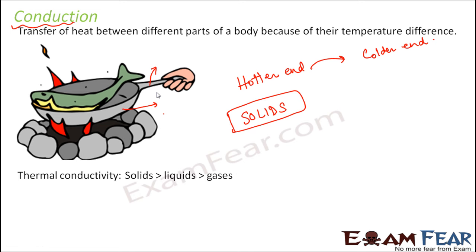Looking at thermal conductivity — that means how much heat is conducted by an object — it is seen that solids are the best conductors. Solids are better conductors than liquids, and liquids are better conductors than gases. Thermal conductivity means the ability to conduct heat; thermal always means heat, and conductivity is the ability to conduct it.